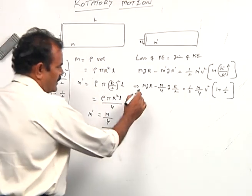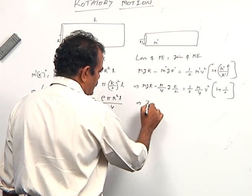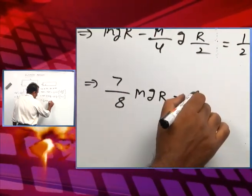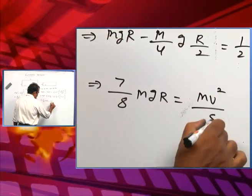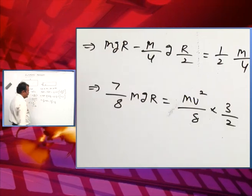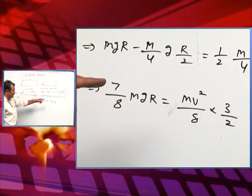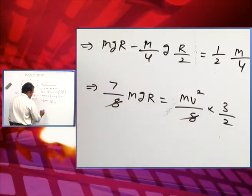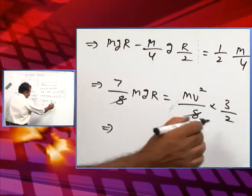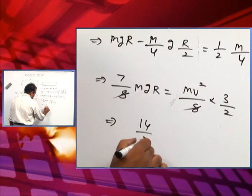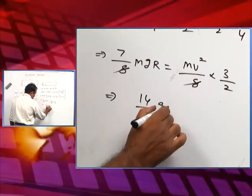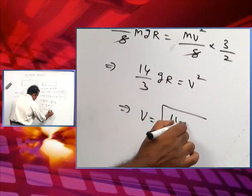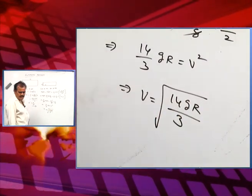So it becomes mgr minus mgr/8, which is (7/8)mgr. On the KE side it is mv²/8 times 3/2. Cancelling m and the factor of 8, we get (7/3) × (2) = 14/3, so v = √(14gr/3).